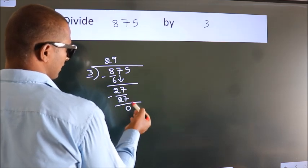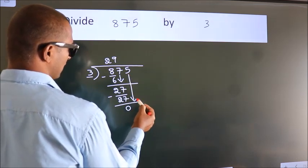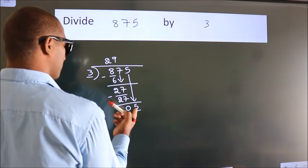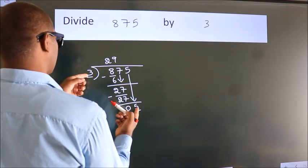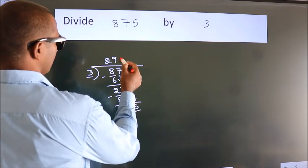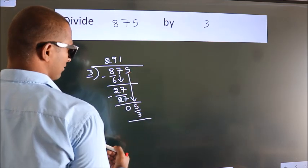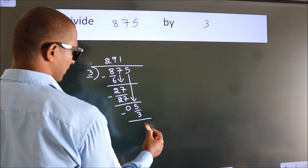After this, bring down the beside number, so 5 down, so 5. A number close to 5 in 3 table is 3 1s, 3. Now we subtract, we get 2.